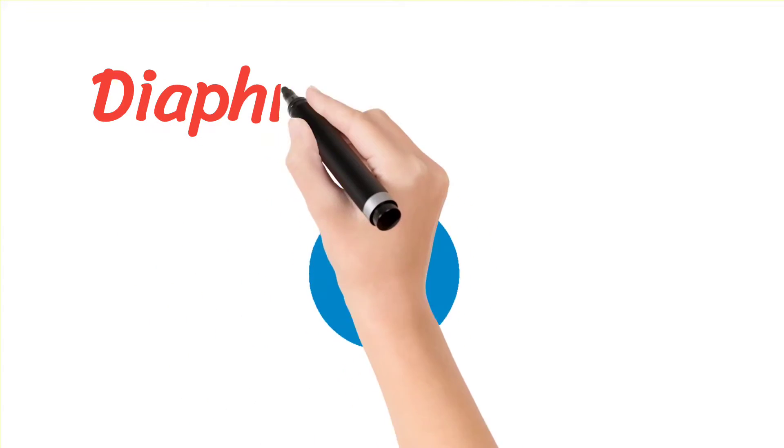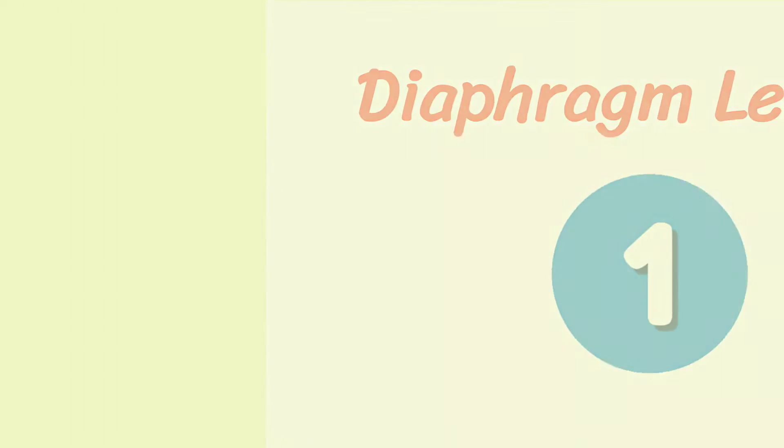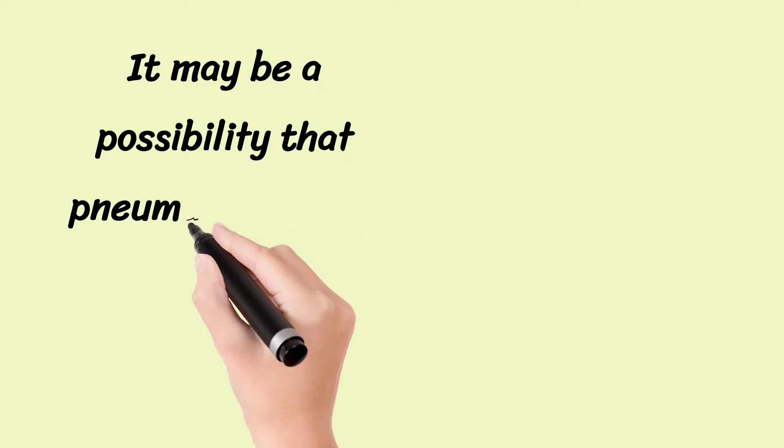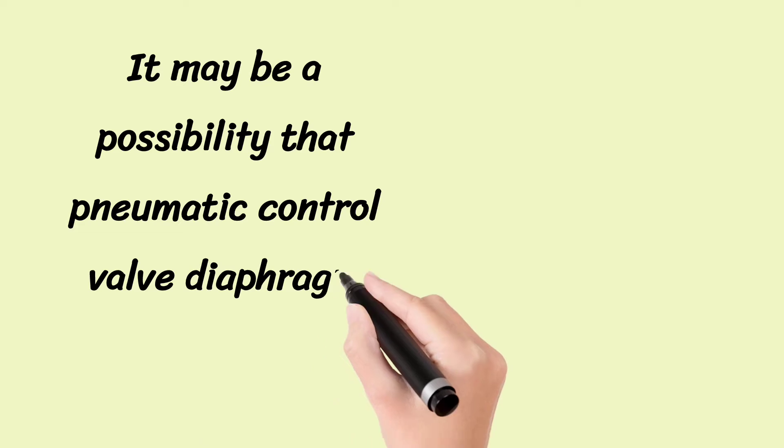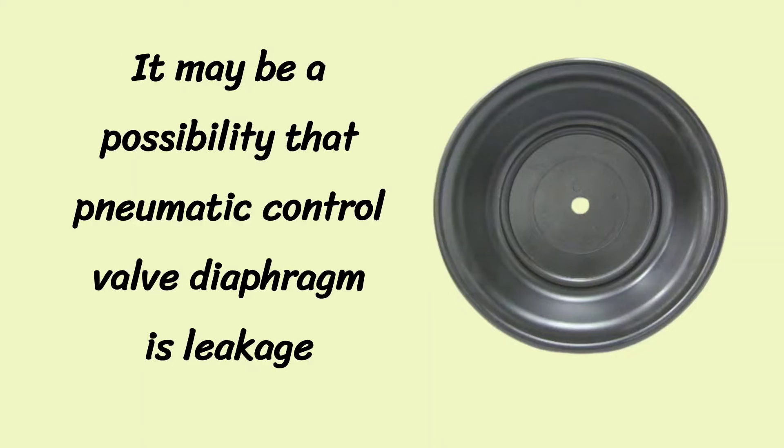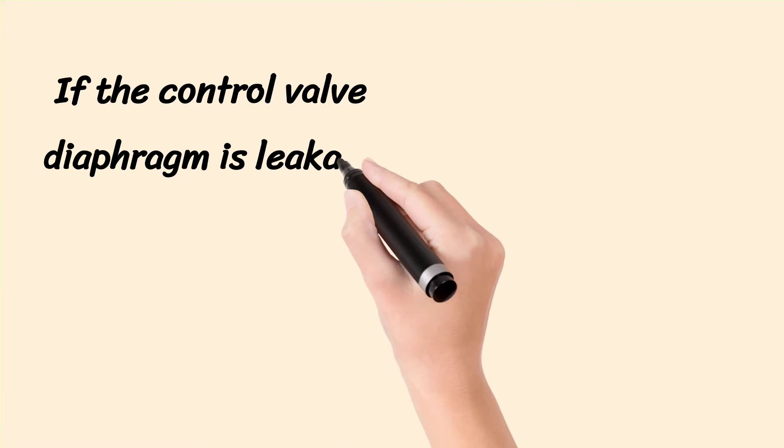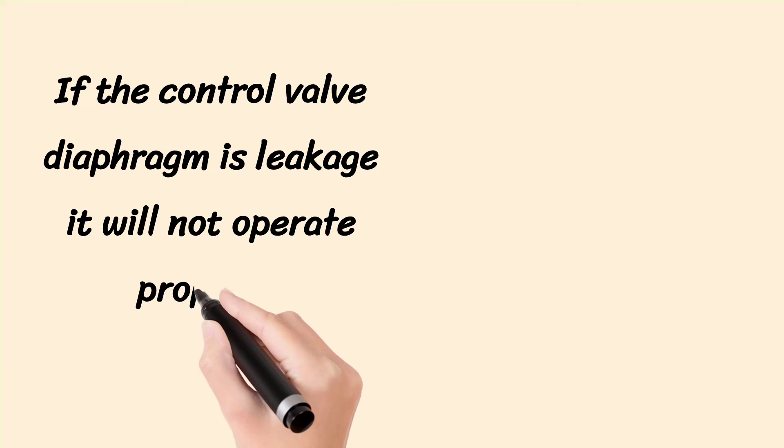The first reason is diaphragm leakage. It may be a possibility that pneumatic control valve diaphragm is leakage. The control valve diaphragm is shown in the image. If the control valve diaphragm is leakage, control valve will not operate properly.